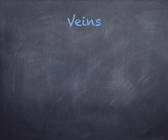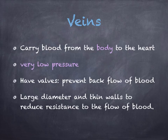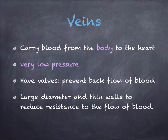Next, looking at veins: their function is to carry blood from the body to the heart. They are under very low pressure, so they have structures called valves which prevent the back flow of blood. Veins have a large diameter and thin walls to reduce resistance to the flow of blood.